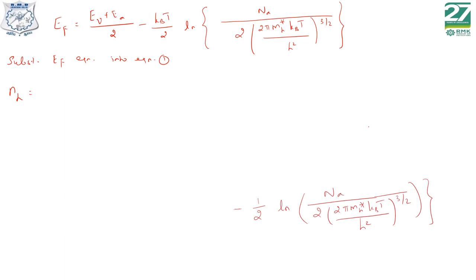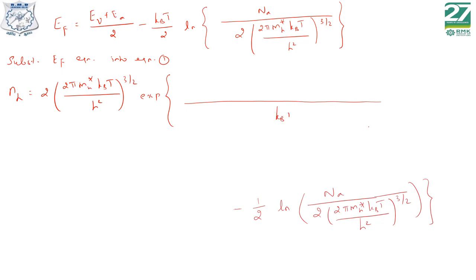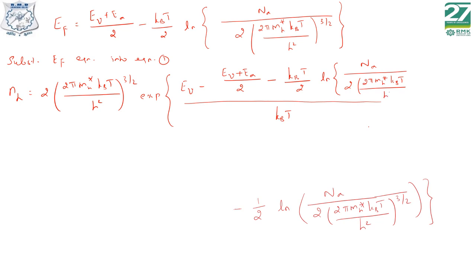So NH is equal to 2 into (2π mH* KBT divided by H²) whole power 3/2, exponential of EV minus EF divided by KBT. So EV minus EF — substituting EF from the above equation: EV plus EA divided by 2 minus KBT divided by 2 ln of NA divided by (2π mH* KBT divided by H²) whole power 3/2. Up to this is EF.